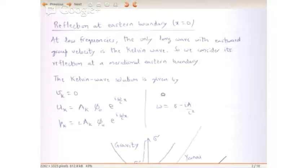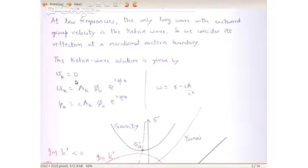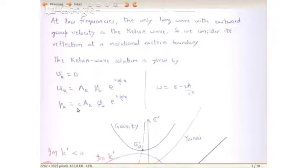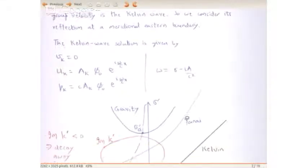The Kelvin wave solution, as seen earlier, is given by V_k equals 0 — there is no meridional velocity associated with the Kelvin wave. U_k equals A_k into phi_0 into e to the power i(omega/c)x, and p_k equals c into A_k into phi_0 into e to the power i(omega/c)x, where omega is sigma minus ia/c squared.